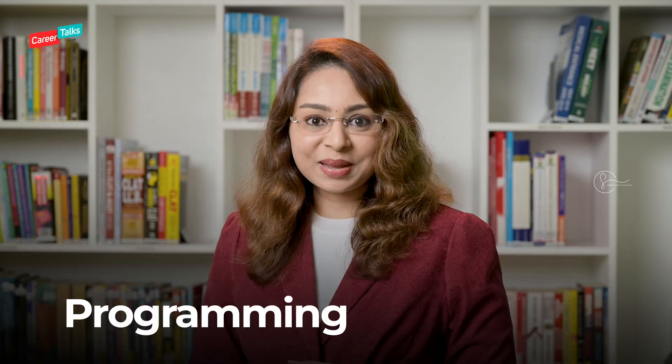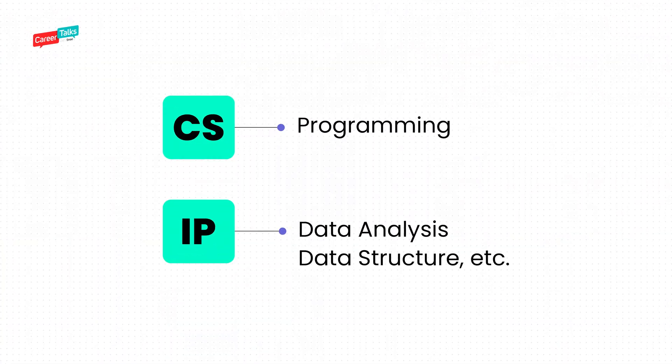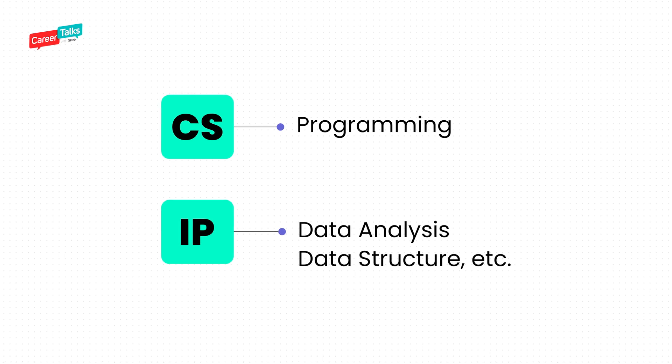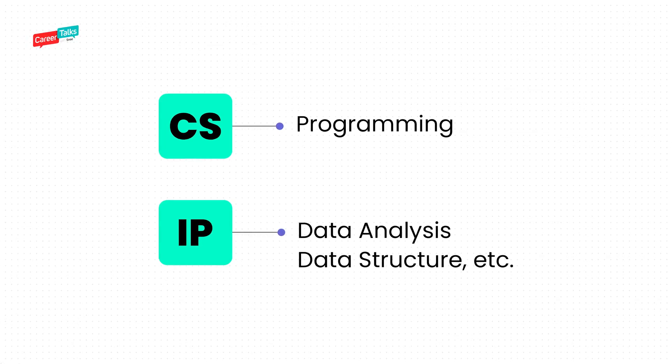For both Computer Science and IP, you learn programming. Programming languages like Python are available in both streams. However, Computer Science mostly orients you towards the programming side, whereas IP focuses more on data analysis, data structures, and things like that. So if you are a student planning to pursue a Computer Science degree after completing 12th grade, it is advisable to go ahead with CS.